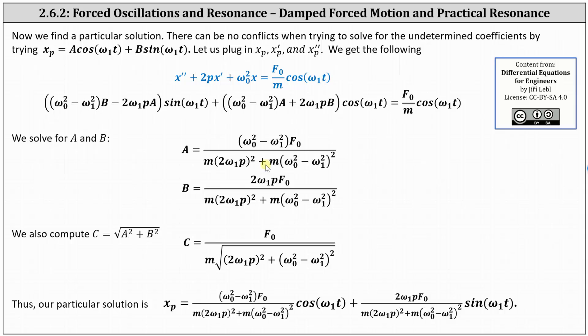For the alternative form of the general solution, we also need C, where C is equal to the square root of the quantity A squared plus B squared. Now that we have formulas for A and B, we have a formula for a particular solution shown here at the bottom of the screen.